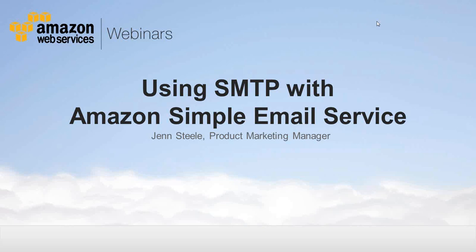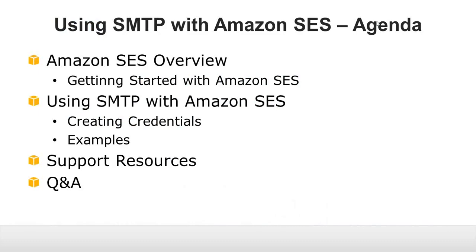They'll be gathering your questions during the webinar, and we'll be answering them at the end. Today we have a pretty simple agenda. To make sure we're all on the same page, I'll go through a brief overview of Amazon SES and how to get started. Then we'll jump into using SMTP with Amazon SES, go through creating credentials in detail, and look at a few examples. After that, Chris and Justin will jump into your questions. The slides and presentation will be posted, and you will receive an email with those links.